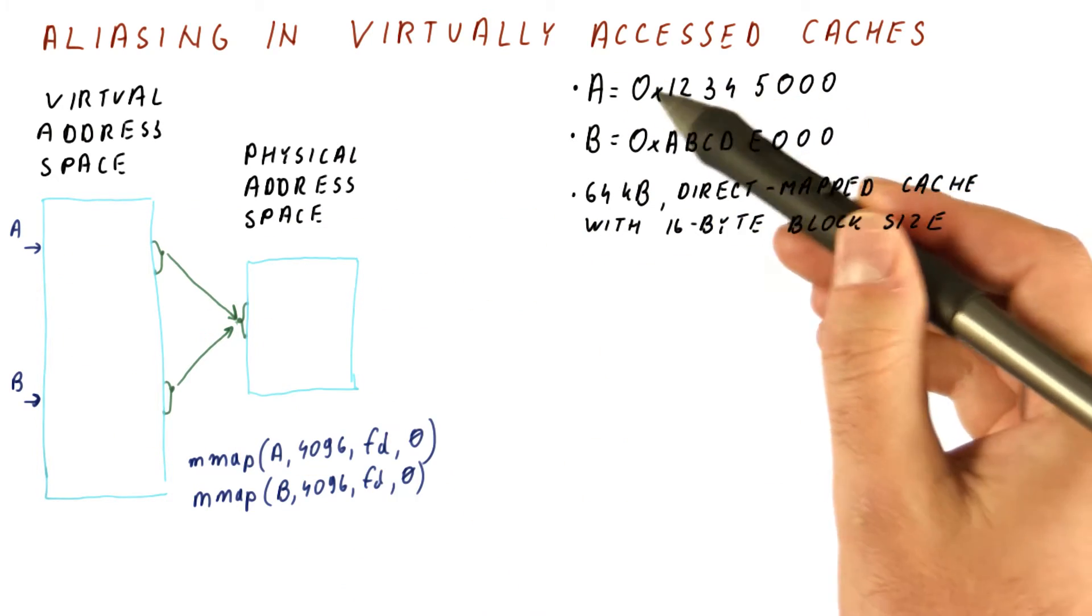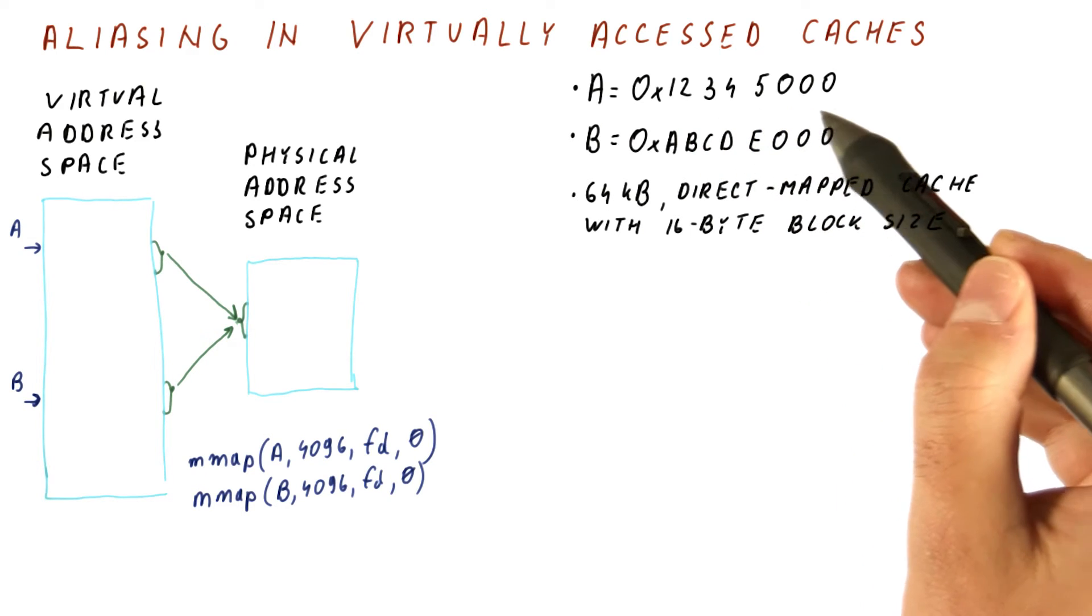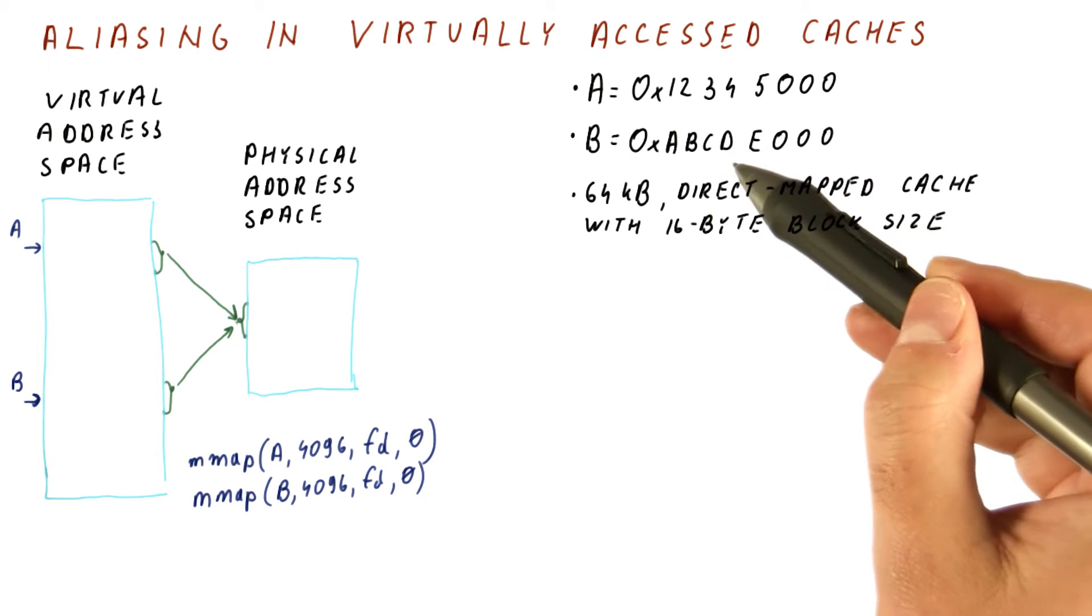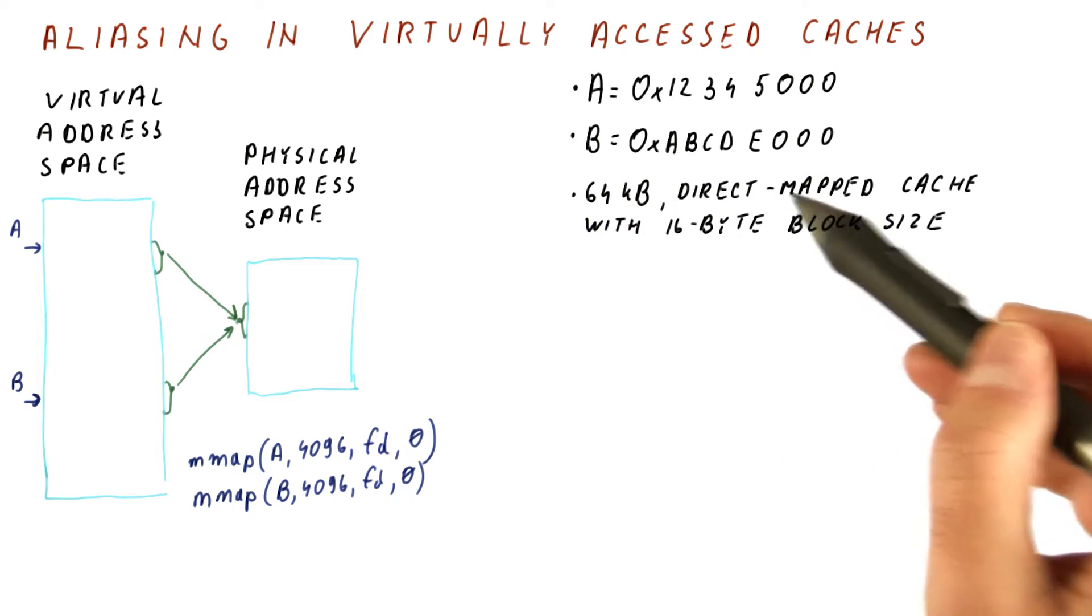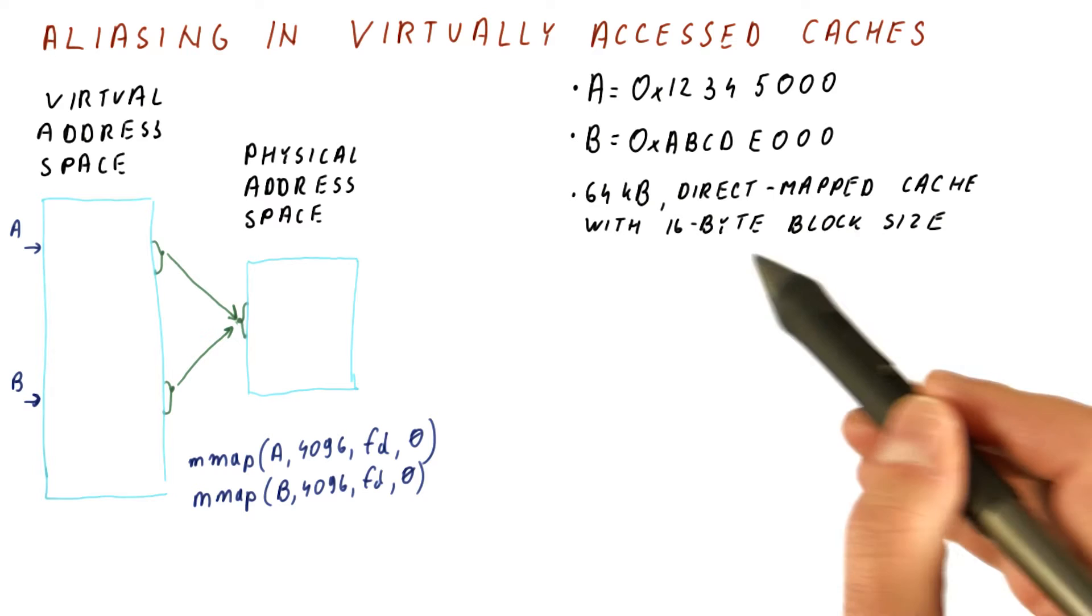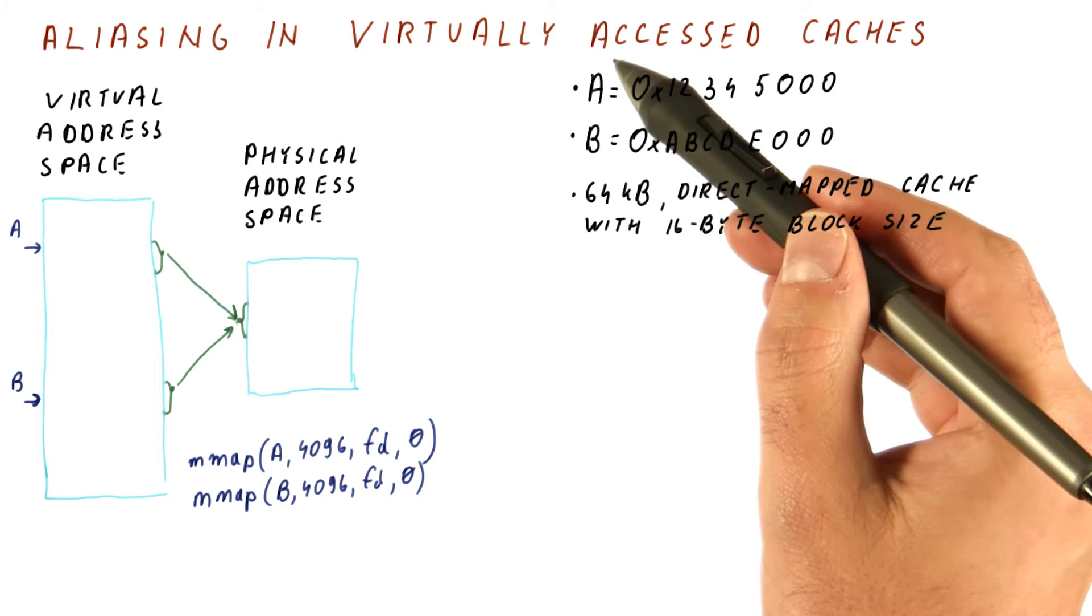So let's say that A and B are 0x12345000 and 0xABCDE000. And let's say that we have a 64 kilobyte direct map cache with a 16 byte block size and that is virtually accessed.